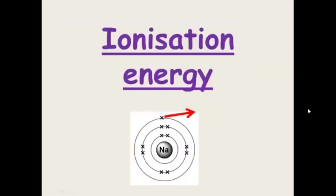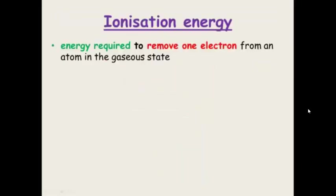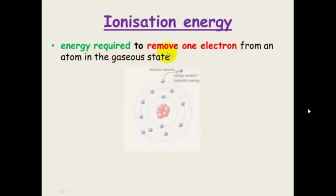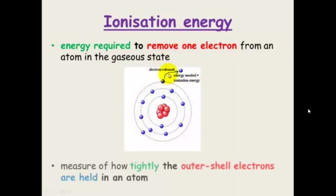Ionisation energy is the energy required to remove one electron from an atom in its gaseous state. It is basically a measure of how tightly the outer shell electrons are held in an atom.